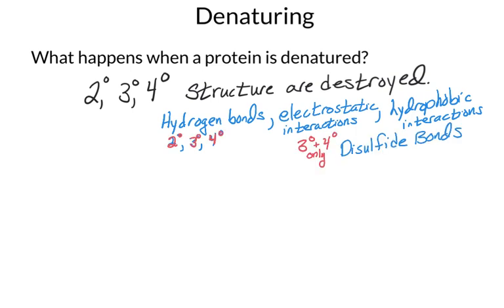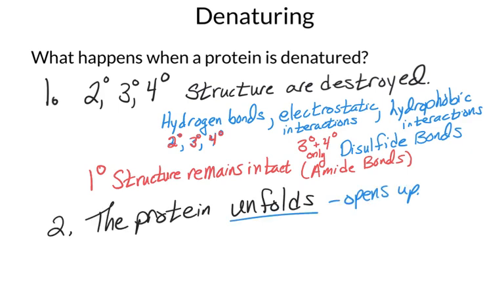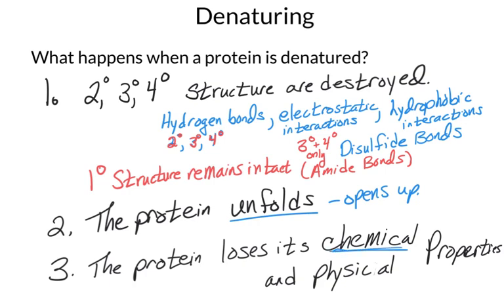Notice that nothing happens to the primary structure. Those amide bonds are very strong bonds and they're hard to destroy. What that tells us is that as the protein is denatured — since only secondary, tertiary, and quaternary structure are destroyed — we call that unfolding, so that the order of the amino acids is still the same, but the protein opens up. And of course when it opens up, it loses its chemical and physical properties because it's no longer in the same shape it originally was, and it is unable to perform the chemical reactions that it was designed to do.